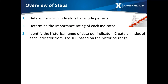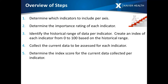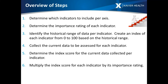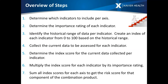Don't worry — we're going to go through each of these calculations. You then look at the current data to be assessed for each indicator, and based on the historical ranges and current data, you set up an index score. You multiply the index score for each indicator by its importance rating, putting everything into context. Then you sum all of the index scores for each axis to get the risk score for each of the two components — that's how you determine the overall risk for that axis.